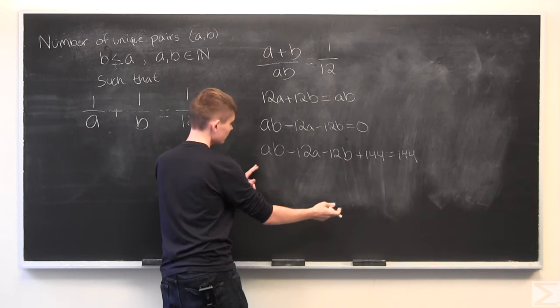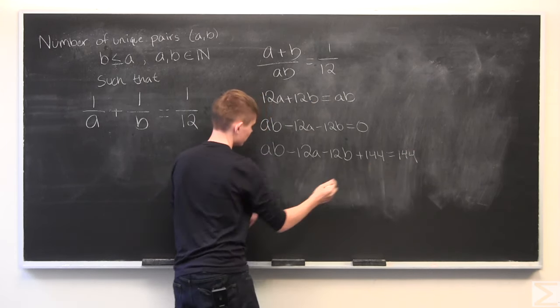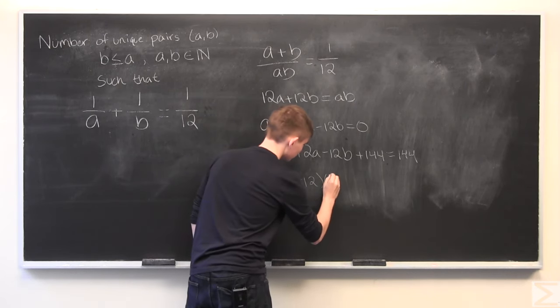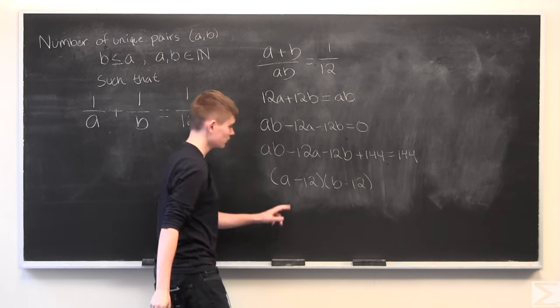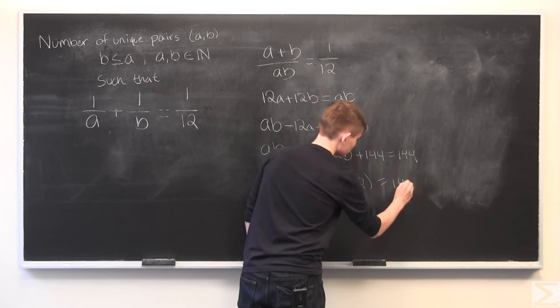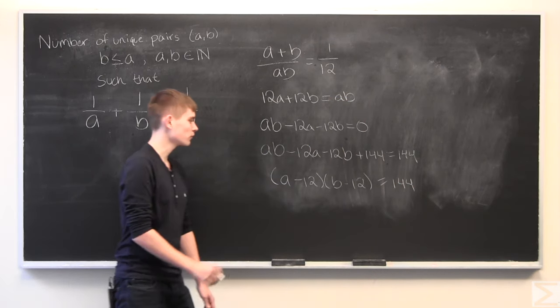And we can simplify this into (a minus 12) times (b minus 12) equal to 144.